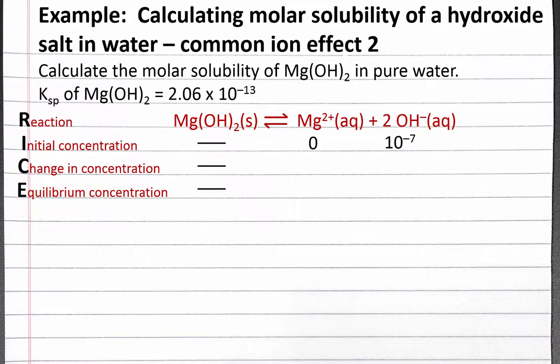Since we don't have any magnesium ions to begin with, our reaction quotient Q will be zero and will be shifting to the right to reach equilibrium. So our change in concentration will be plus x for magnesium and plus 2x for hydroxide, where x is the moles of solid magnesium hydroxide that dissolve in one liter of solution. This means x is also our molar solubility of magnesium hydroxide, which is what we're solving for. At equilibrium, our concentration of magnesium will be x and our concentration of hydroxide will be 10 to the negative 7 plus 2x.